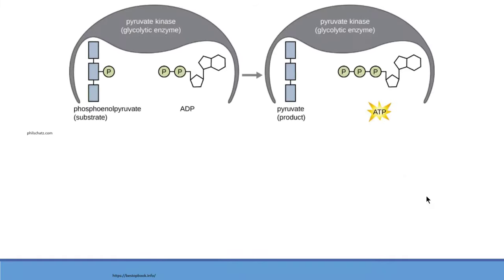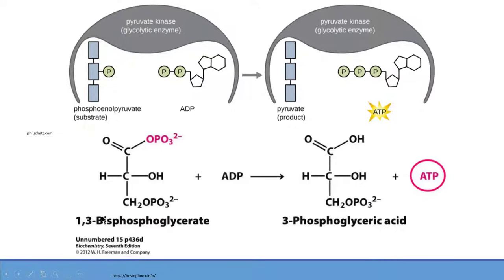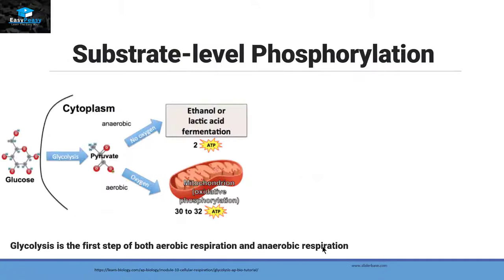The two most common examples of substrate-level phosphorylation are: first, phosphoenolpyruvate (PEP) — a substrate that has a phosphate group attached to it. With the help of pyruvate kinase, it releases its phosphate group and lets it attach to adenosine diphosphate, converting it into ATP. The second example is 1,3-bisphosphoglycerate — in this compound, a phosphate group gets donated to ADP, converting it into ATP, while the substrate converts itself into 3-phosphoglyceric acid.